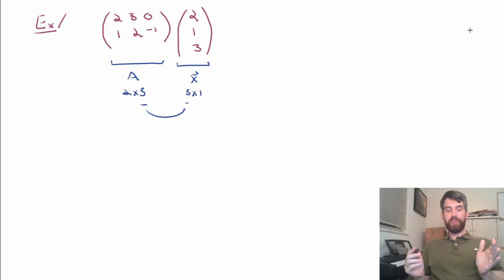This property, that these sort of two inner numbers matched, is critical. Matrix multiplication doesn't even make sense if this property is not true.